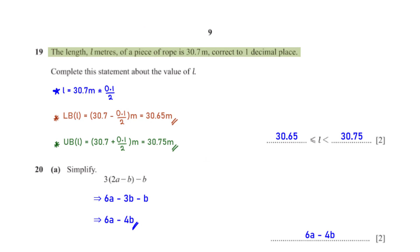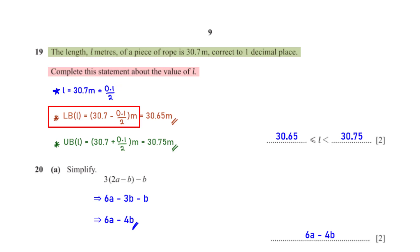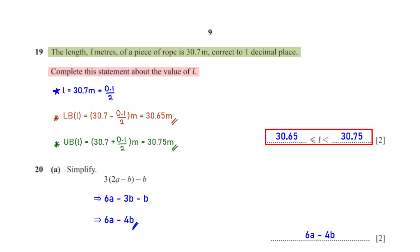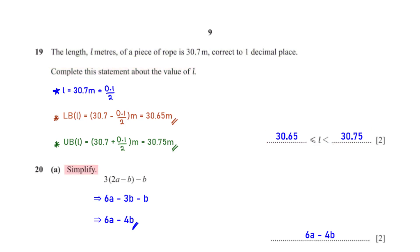The length l metres of a piece of rope is 30.7 metres correct to one decimal place. For the lower bound of l: 30.7 − 0.1/2 = 30.65 metres. For the upper bound of l: 30.7 + 0.1/2 = 30.75 metres. So we have 30.65 ≤ l < 30.75.